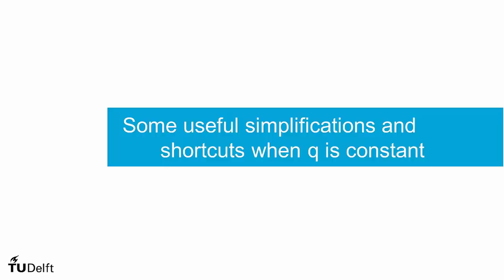Now that we've looked at idealized structures using the sheet boom approximation, let's look at some useful simplifications and shortcuts that we can use when considering Q as a constant on these sheets between booms.